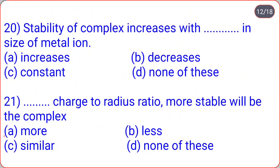Stability of a complex increases with decrease in size of the metal ion. Higher the charge-to-radius ratio, more stable will be the complex.